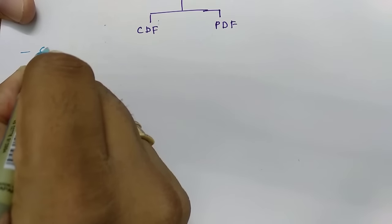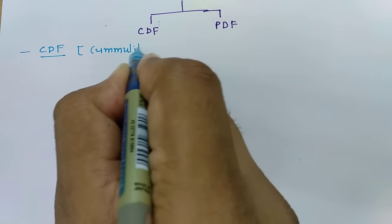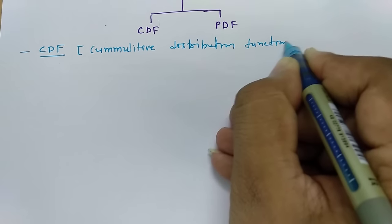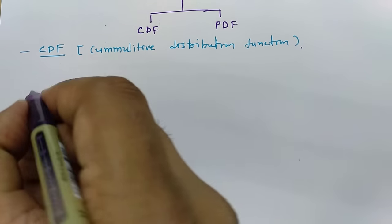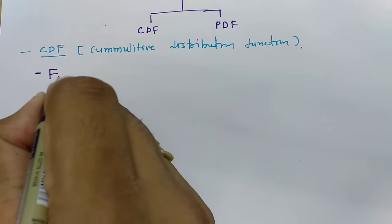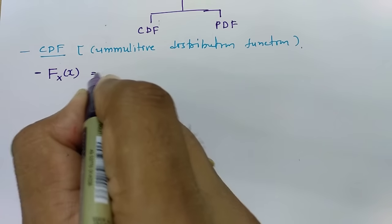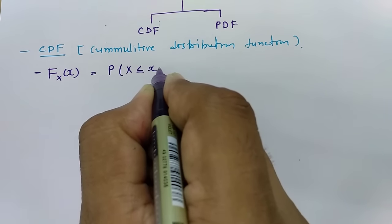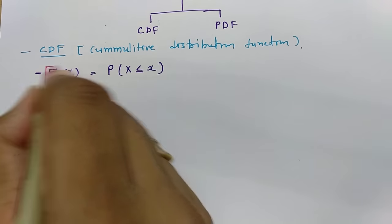Let us start with CDF, cumulative distribution function. First of all, let us understand how to denote this. We usually note it as capital F(X), that is F of x. We represent it as the probability that capital X is less than or equal to small x. That is how we note CDF, cumulative distribution function.